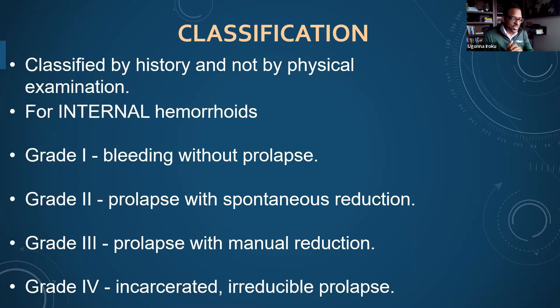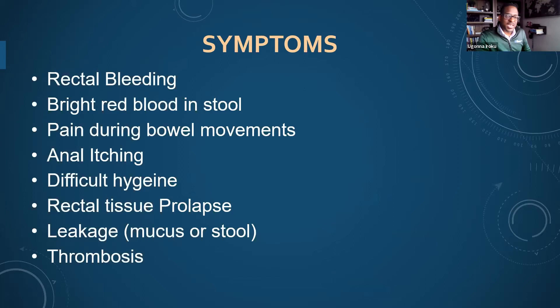What are the symptoms of hemorrhoids? Could be bleeding, red blood in the stool, pain with bowel movements, that itchiness, difficult hygiene, a sense of incontinence or smearing in the underwear, prolapse as mentioned, rectal tissue leakage, and then thrombosis — where you have some clot formation in the blood vessels there.